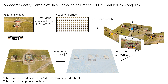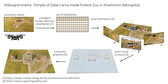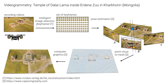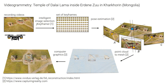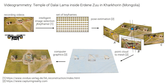In videogrammetry, we use videos, and in a first step, select the important images required for the reconstruction — the so-called keyframes — from the large number of individual images in the video. The program J Keyframer, for example, can be used for this.